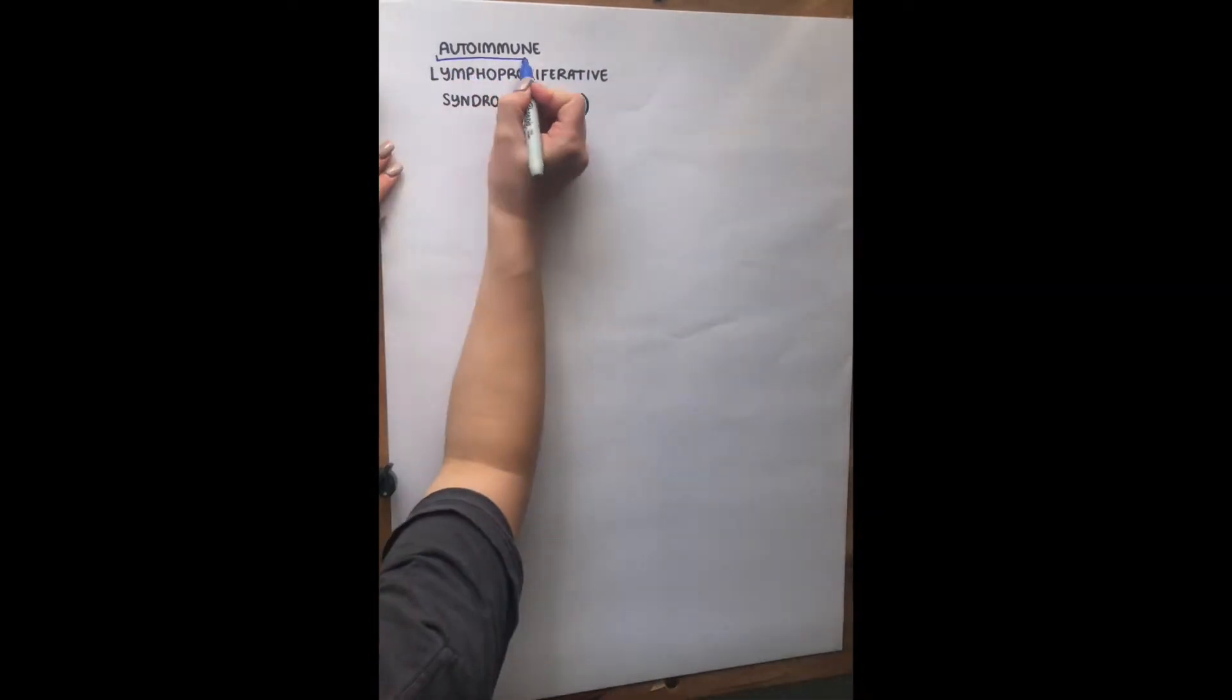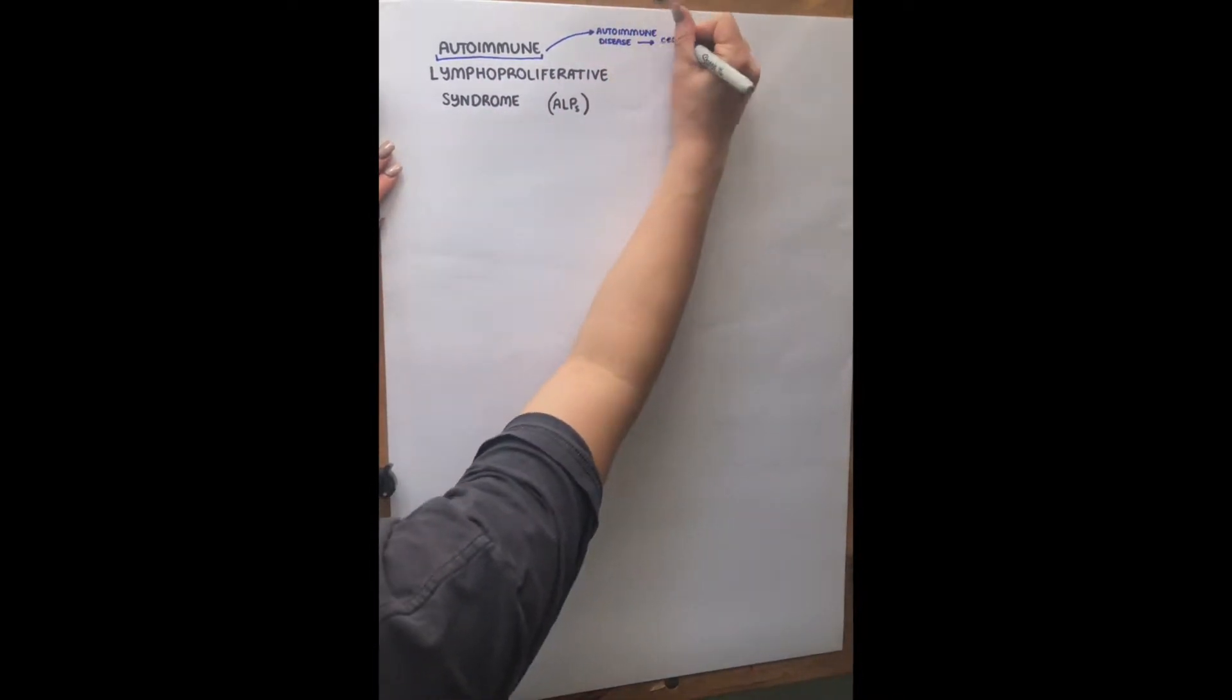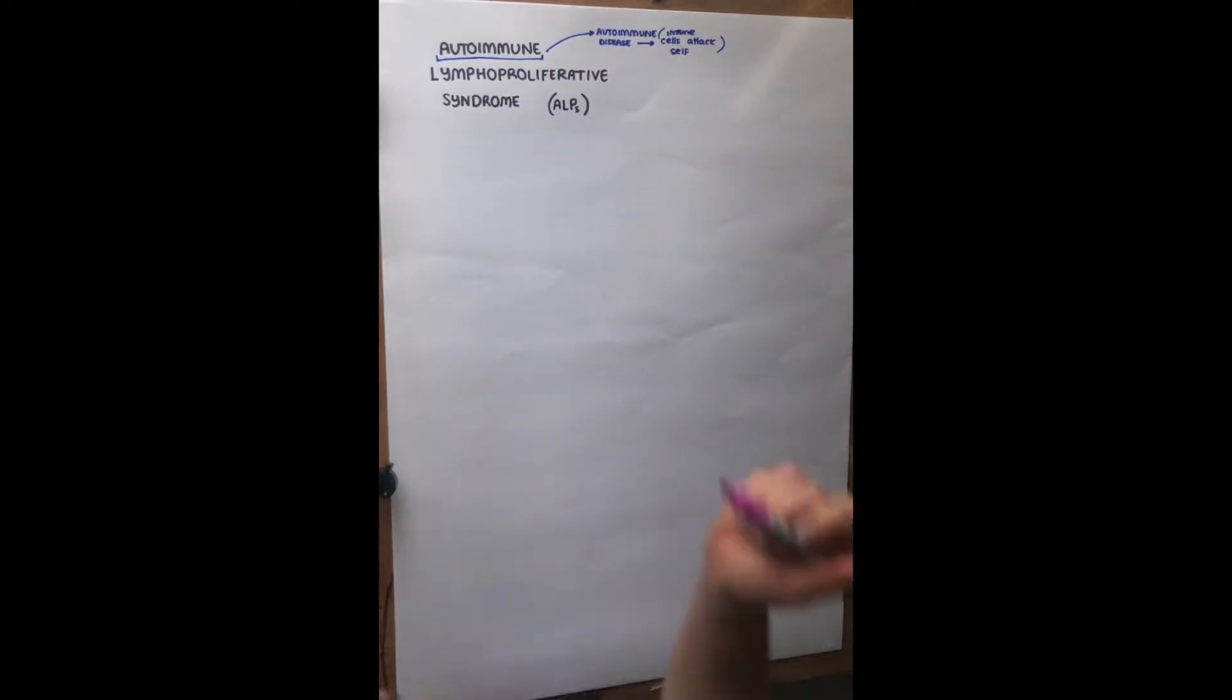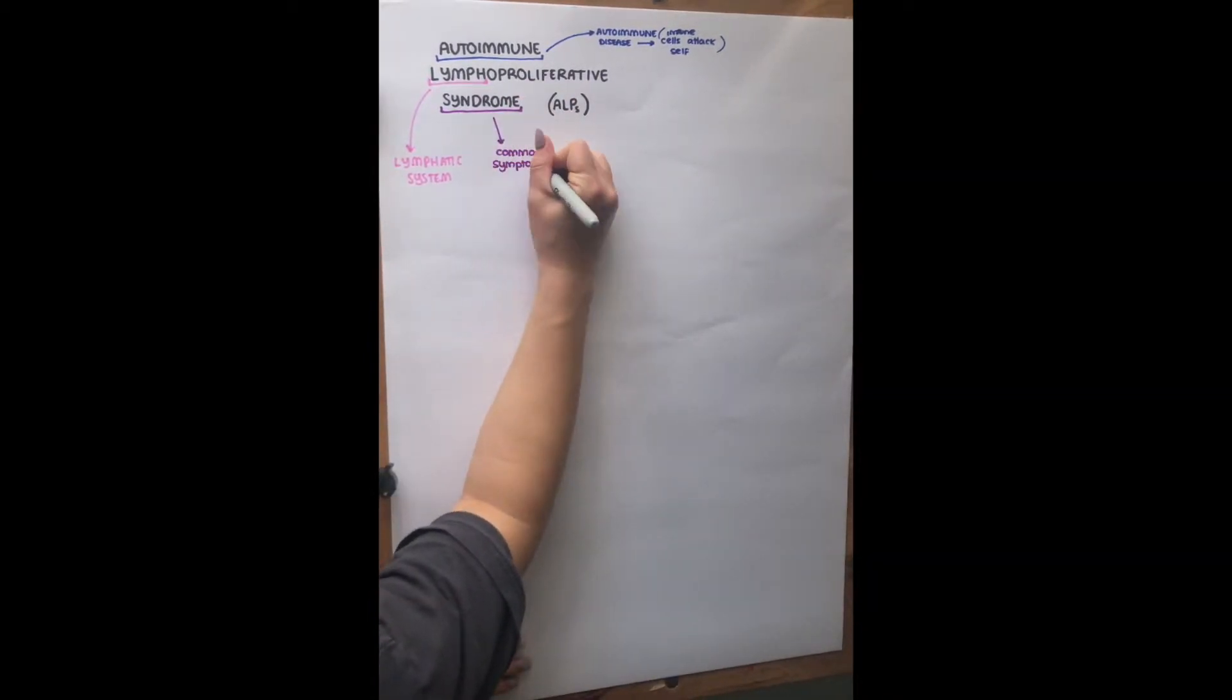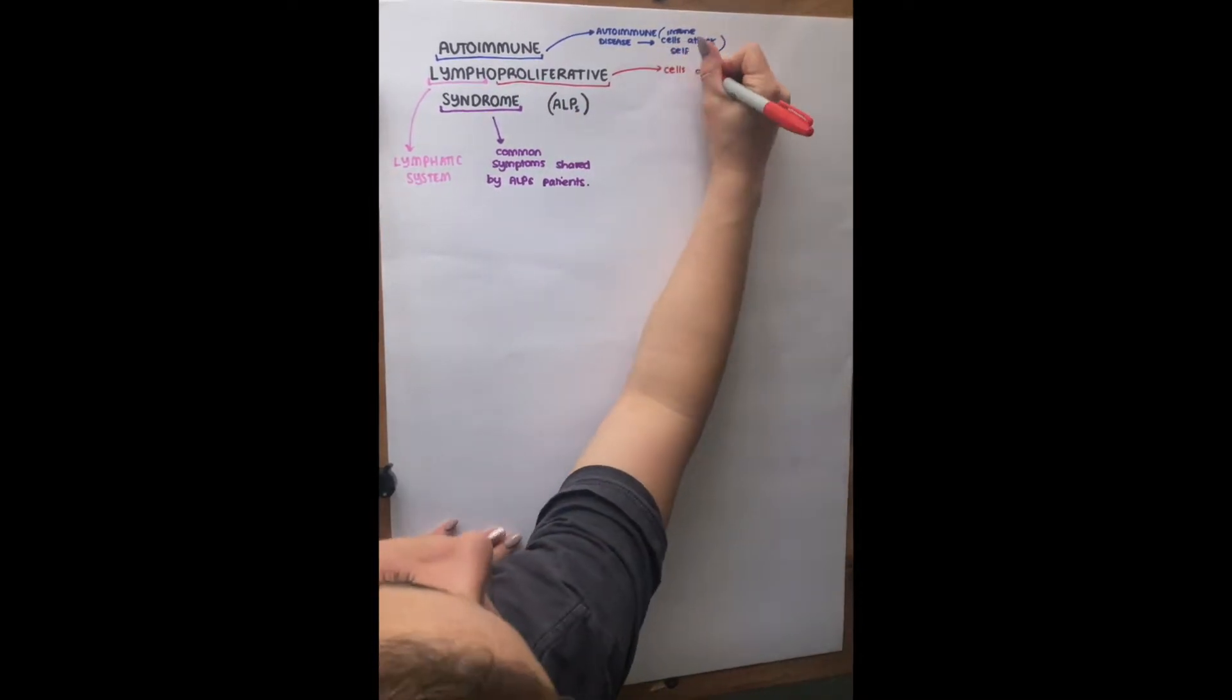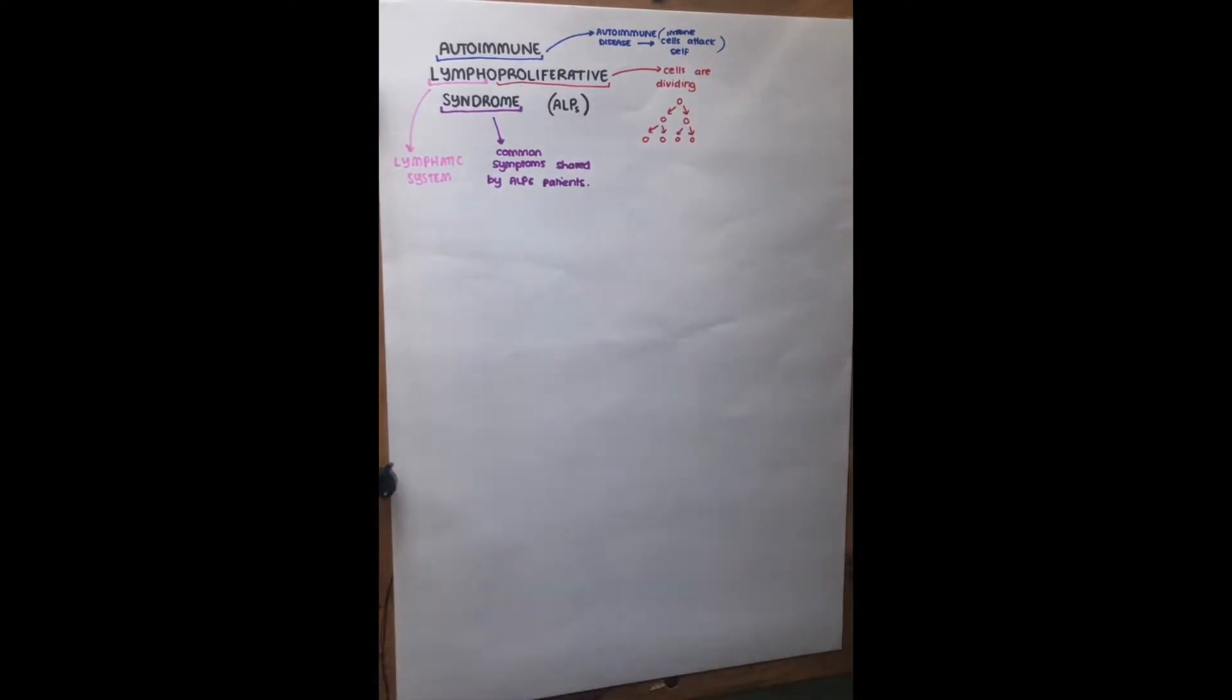So autoimmune means that the cells in your body attack themselves. So your immune system is attacking yourself even though it shouldn't. Then lymph generally means it's a part of the lymphatic system, which I will go over. Syndrome is related to the common symptoms shared by all ALPS patients or most ALPS patients. And proliferative means that cells are dividing or they're growing in a way, so accumulating.